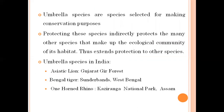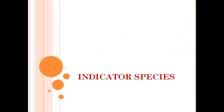Some examples of umbrella species from India include the Asiatic lion in Gir National Park — the main aim is to conserve the lion, but all other species in that park are also conserved. Similarly, the Bengal tiger in the Sundarbans and the one-horned rhinoceros in Kaziranga National Park — protecting one species benefits all others.